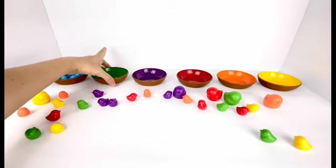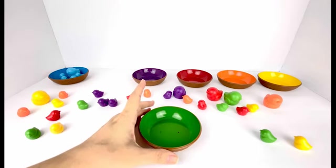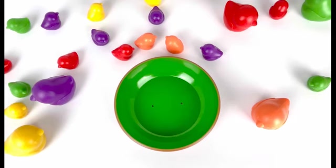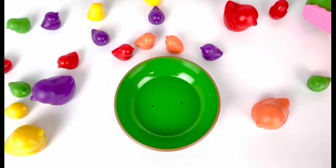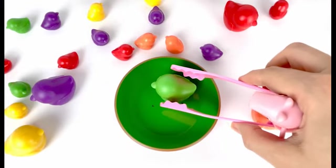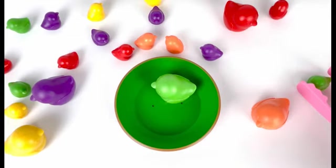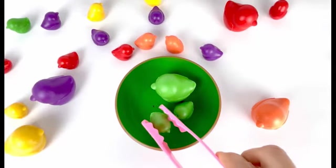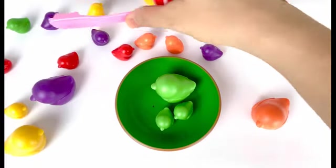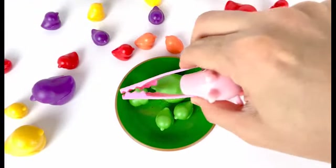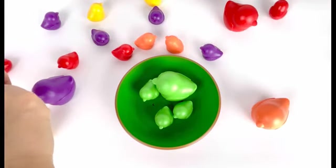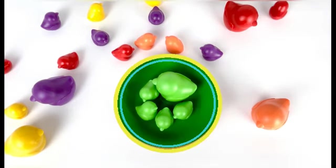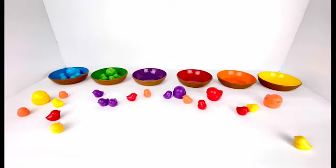The next one is the green nest. Green! Now let's collect the green birds and put them into their nest. One, two, three, four, five. Five green birds in a green nest.